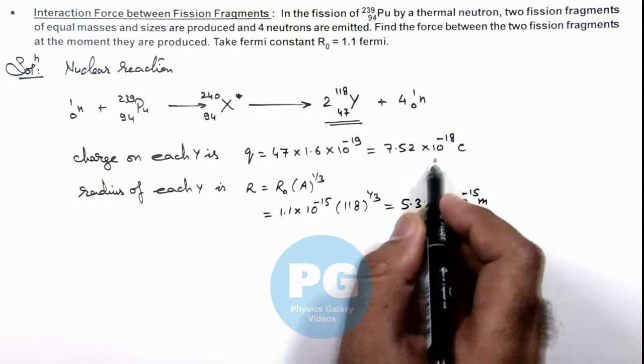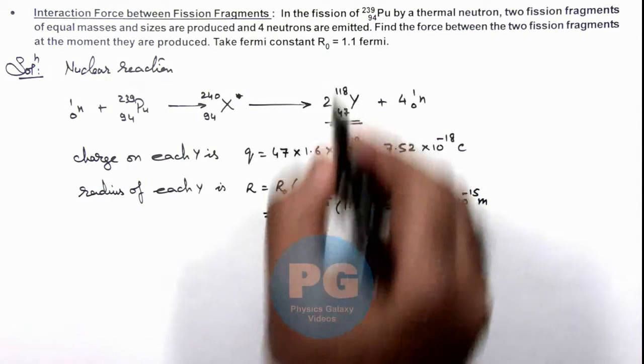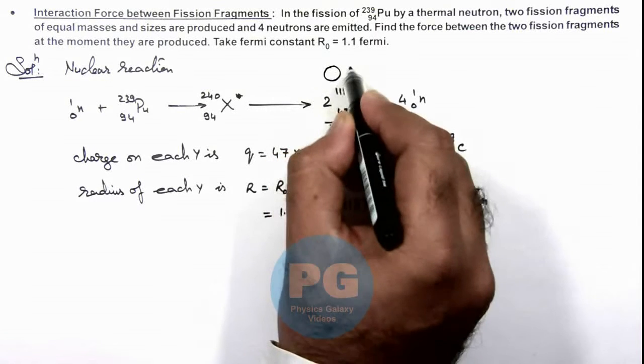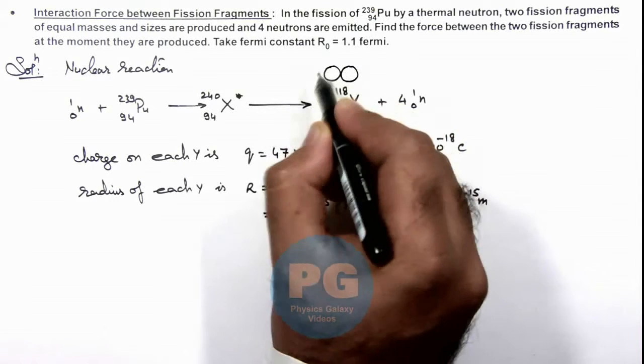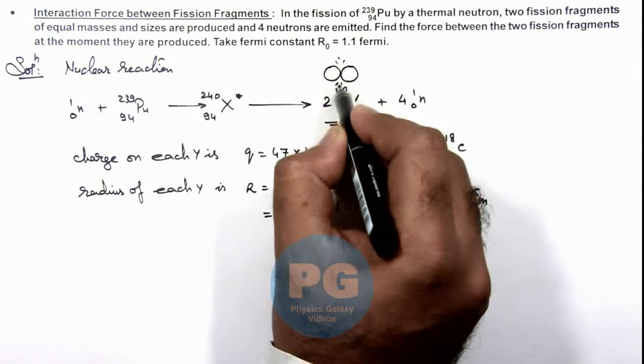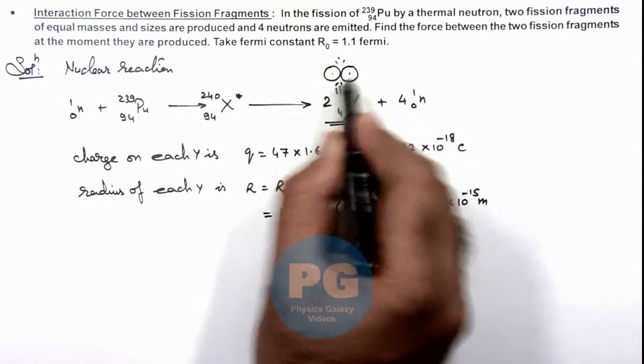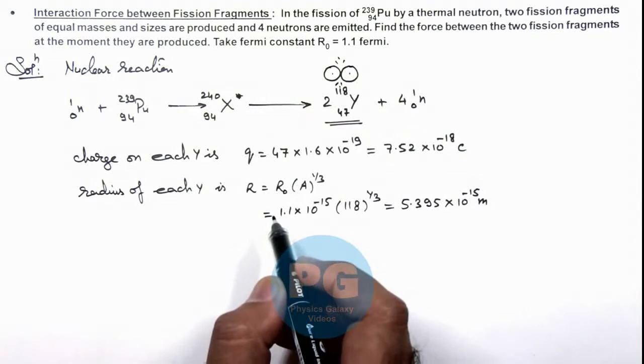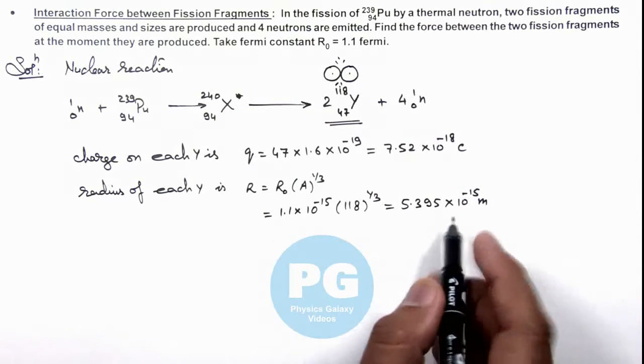So we can say when these two Y are produced, they would be almost touching each other when the fission takes place. So in this situation, the separation between the two fragments can be taken as twice the radius.